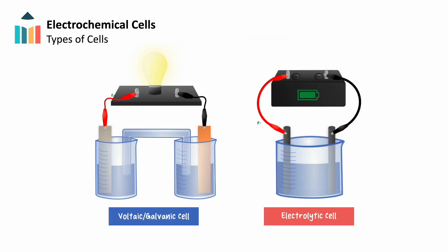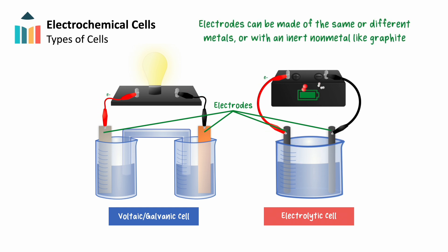Both voltaic and electrolytic cells consist of two electrodes, which we use to conduct current. Electrodes can be made of metals — the same or different depending on intended use — or inert non-metals like carbon and graphite. To allow electrons to flow between the two electrodes, we must connect them with a wire, shown in red and black. In an electrolytic cell, the wire intersects with the power source. Because this is a non-spontaneous reaction, we can place both electrodes in the same electrolyte.